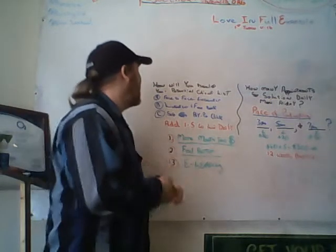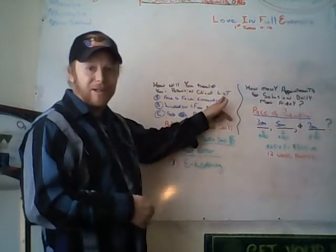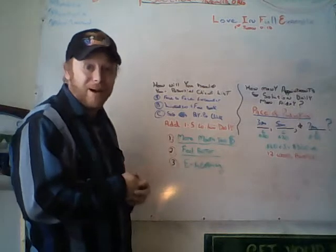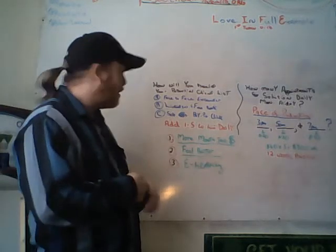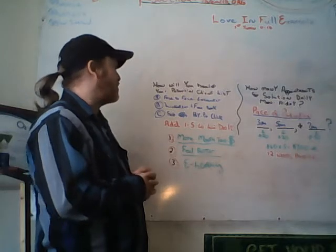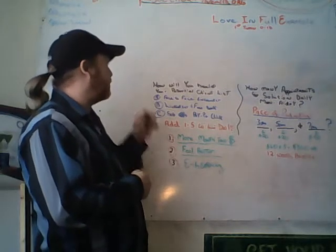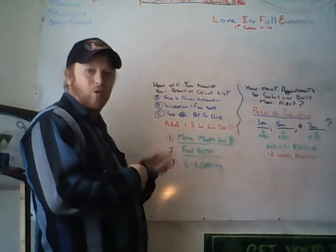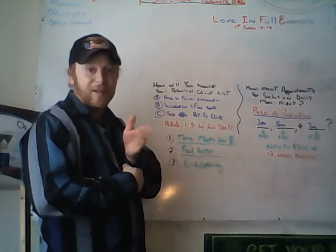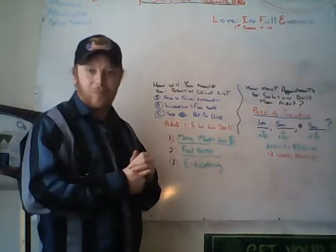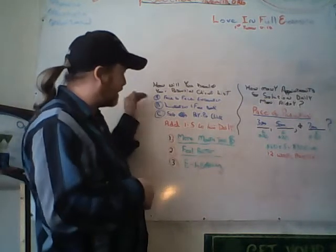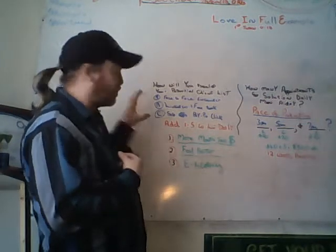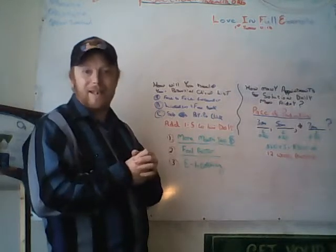There are two key things that are the absolute life or death of your business. First: how will you develop your potential client list? Without people to serve you have no income — that's the bottom line. Where are you going to find them? Face-to-face encounters daily, LinkedIn or Facebook daily, or through solo ads or pay-per-click advertising. These are three of the most solid ways entrepreneurs add to their list.